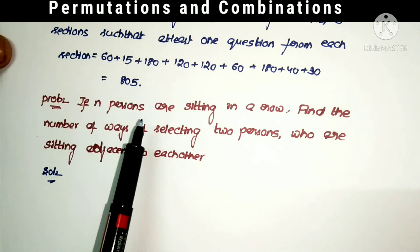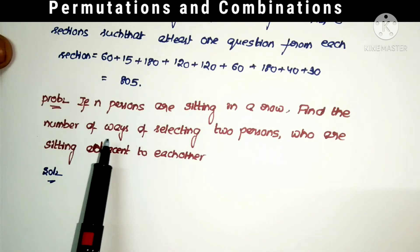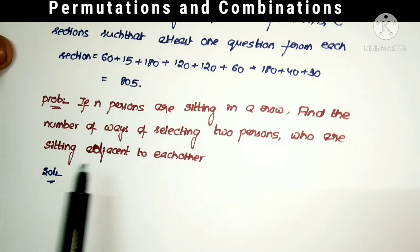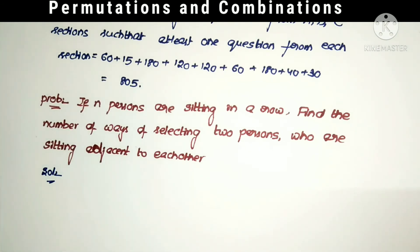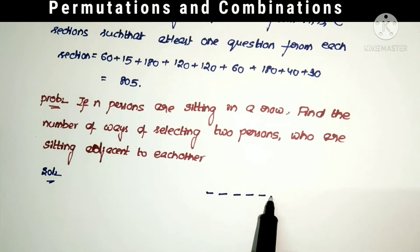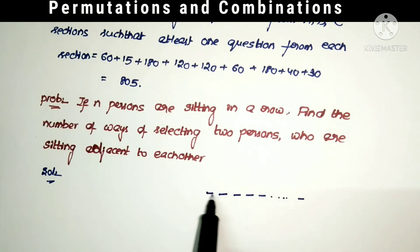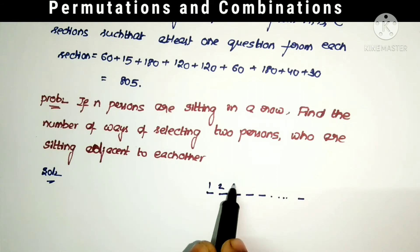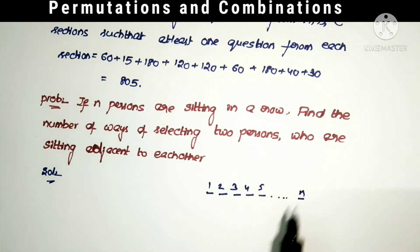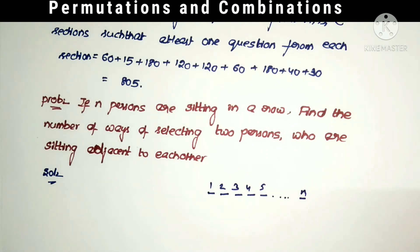Next problem: if n persons are sitting in a row, find the number of ways of selecting two persons who are sitting adjacent to each other. Given that n persons are sitting in a row as 1, 2, 3, 4, 5, and so on, find the number of ways of selecting two persons who are each side to each other.